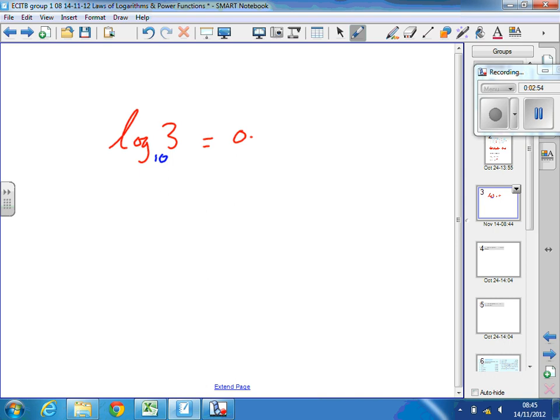0.4771 to four significant figures. That's a power of 10. That means that 10 to the power 0.4771 is 3. In other words, we're turning a number, 3, into a power of 10.